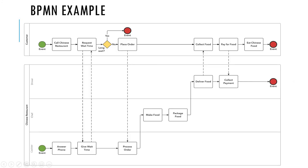Now let us see an example of a BPMN diagram. There are two pools: one is the Chinese restaurant, which has three lanes — driver, chef, and cashier — and the other pool is the customer, which has no lanes inside. In this diagram, there is a start event, an end event, several tasks represented by rectangular boxes, a gateway, and connecting objects that connect one task to another.